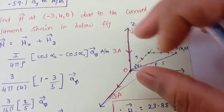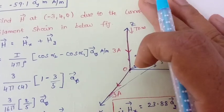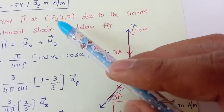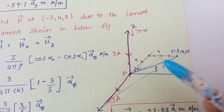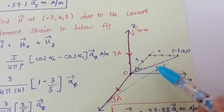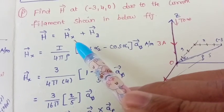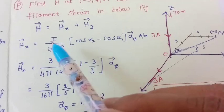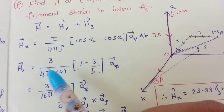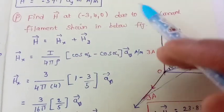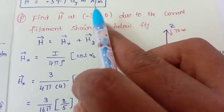For the conductor along the x-axis, the point is (−3, 4, 0). Since the conductor lies on the x-axis, the x-component becomes 0, so rho equals 4. The conductor extends to infinity, so α2 equals 0° and cos α2 equals 1. For α1: the hypotenuse is 5 (from the 3-4-5 triangle), so cos α1 equals 3 upon 5. Therefore the expression becomes (1 − 3/5) along the phi direction, giving H_x.